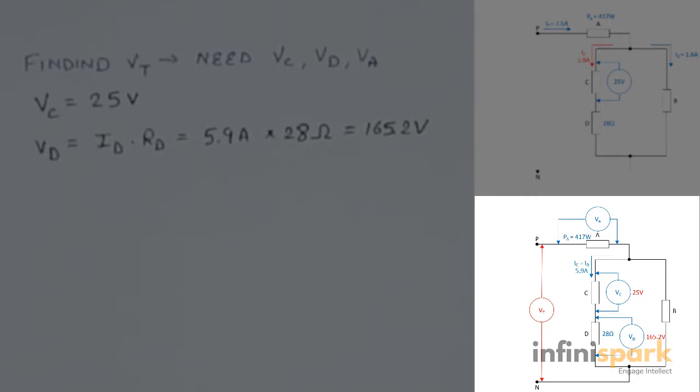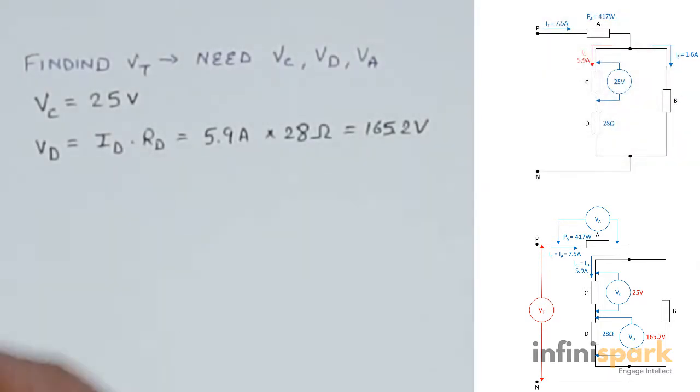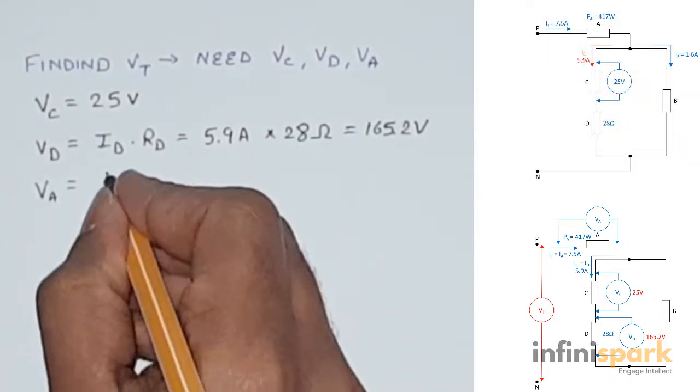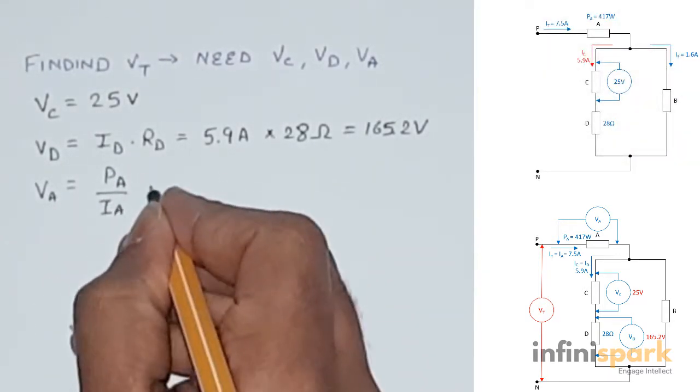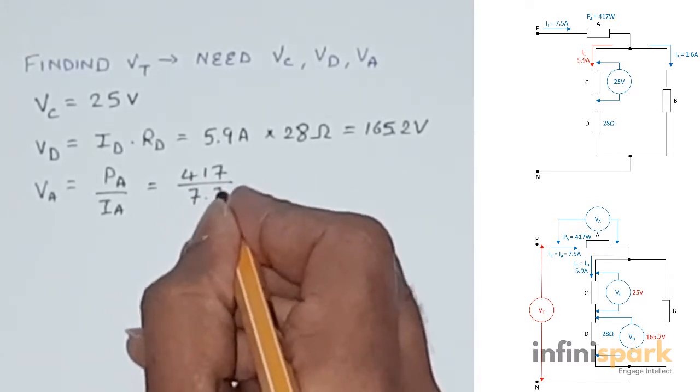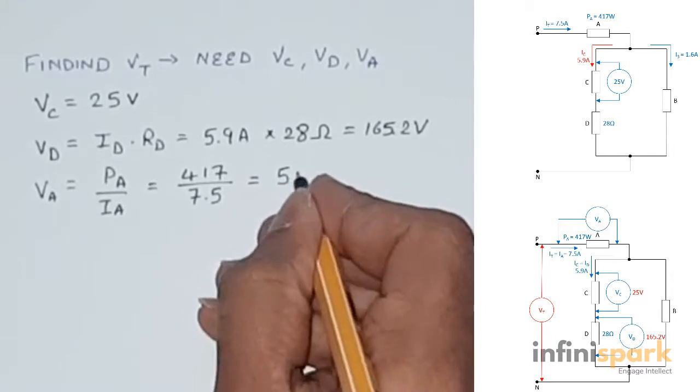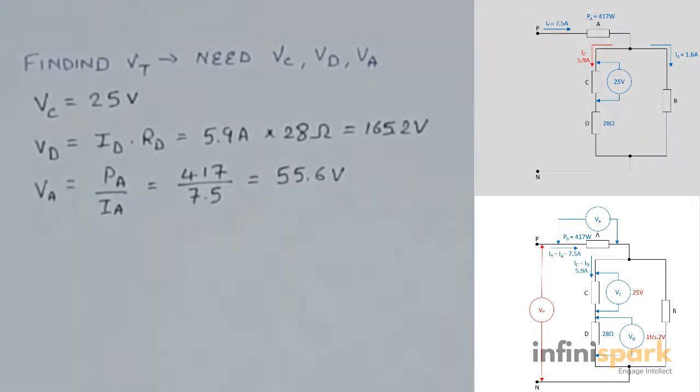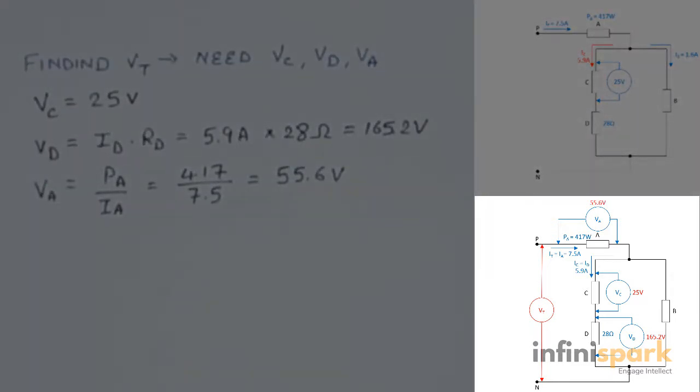To find VA, we need PA and IA, which is same as IT. By transposing the power formula, we can find VA, which will be equal to PA divided by IA, 417 divided by 7.5, which will give us 55.6 volts. So the voltage drop across resistor A is 55.6 volts.